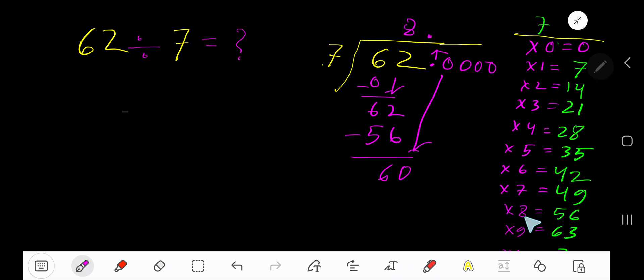9×7=63 which is greater, so 8 times. 8×7=56, subtract, getting 4. Bring down another zero. 7 goes into 40 how many times? 6×7=42 which is greater, so 5 times. 5×7=35, subtract, getting 5.